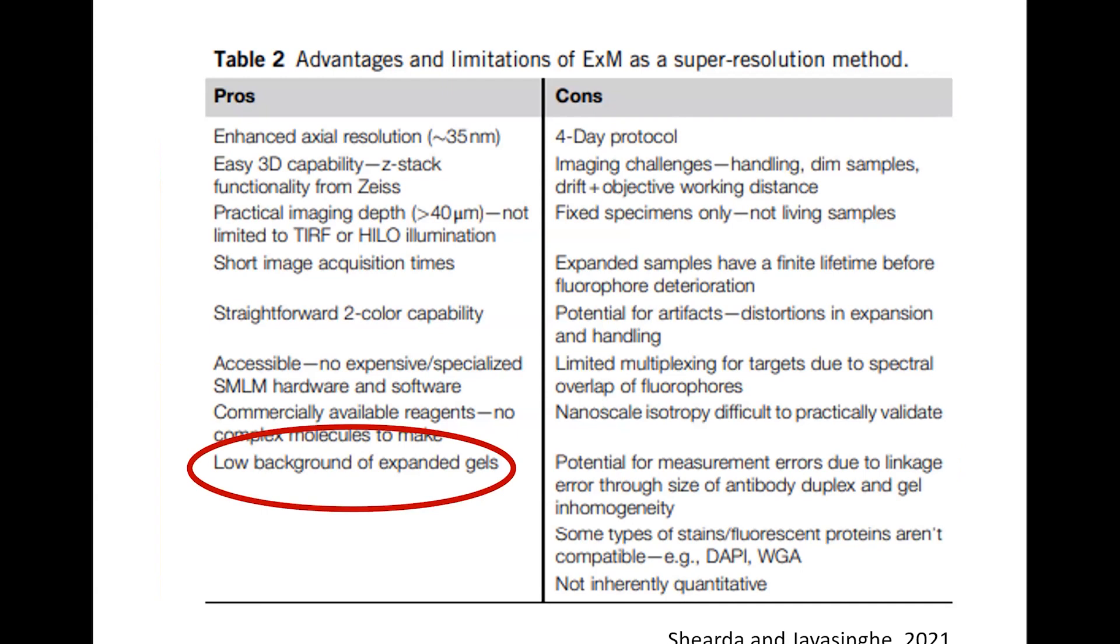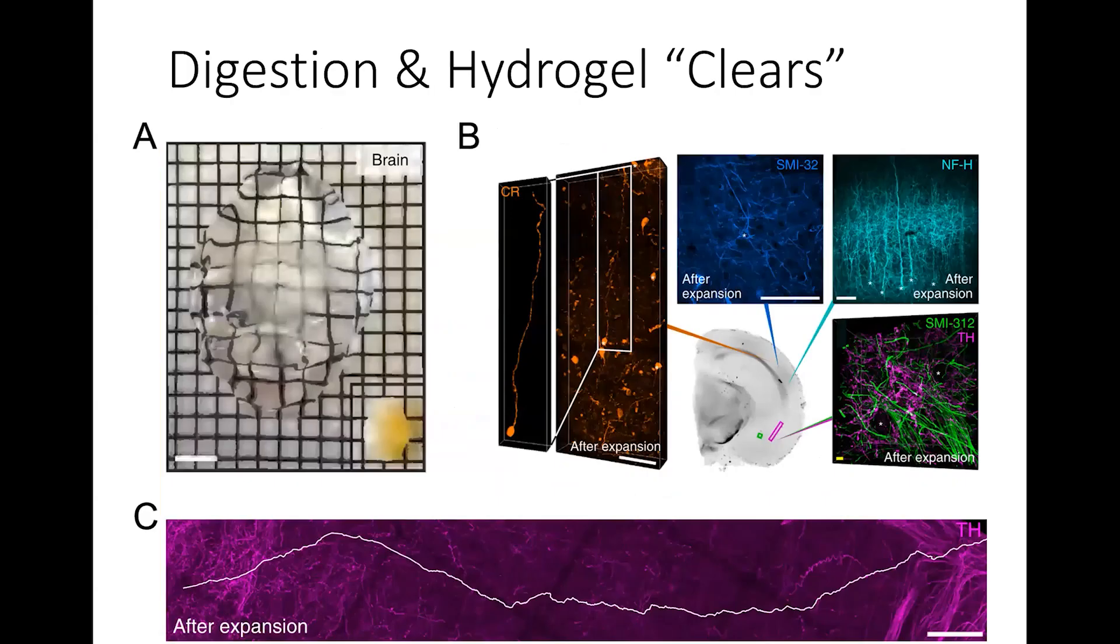This is from the review from earlier. We're going to go over one of the great pros of this, which is that the digestion and hydrogel effectively clears the sample fairly well. In A, we have a mouse brain; in the right corner of that is after dissection. And the larger one that looks clear and is distorting the boxes is the brain after digestion and expansion. We can look at the other panels to see how much clearer you can see individual neurons with this. Normally, if you have uncleared brain tissue, you have so much light scattering molecules that you would not be able to see this.